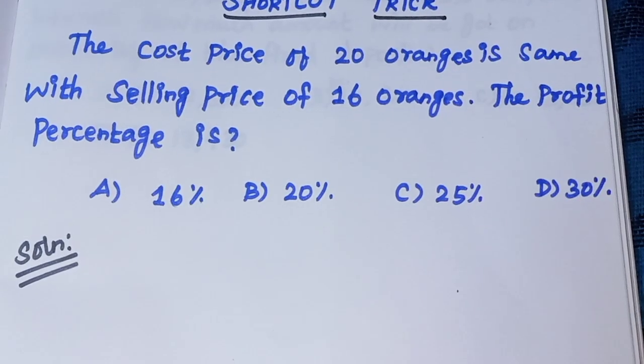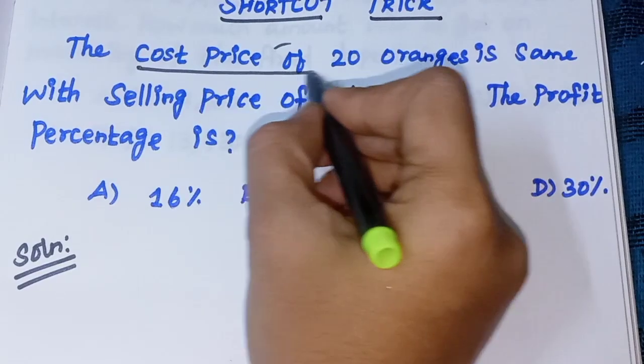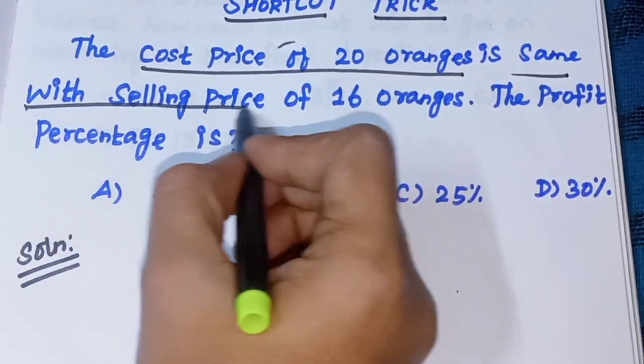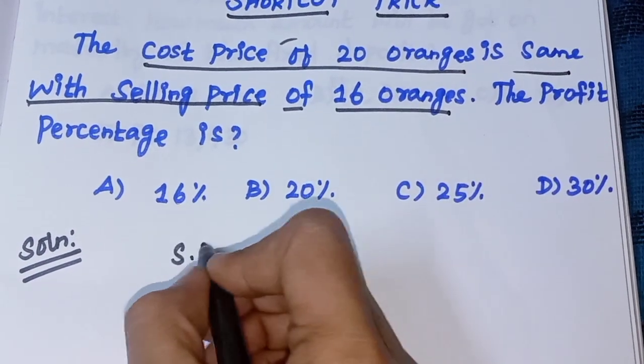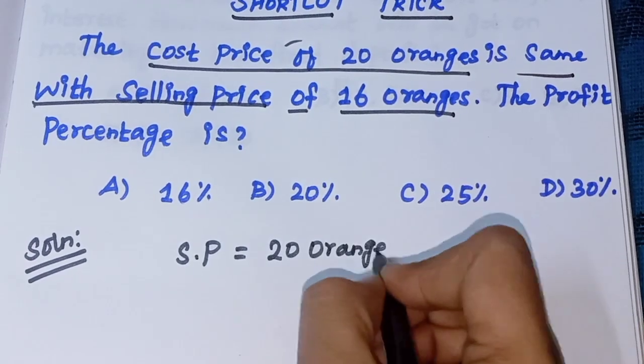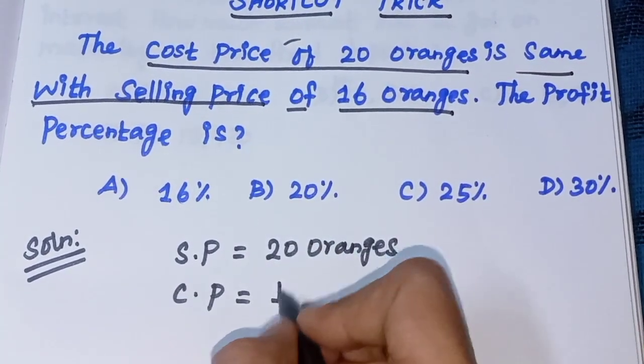Solution. The cost price of 20 oranges is the same as the selling price of 16 oranges. So selling price equals 20 oranges and cost price equals 16 oranges.